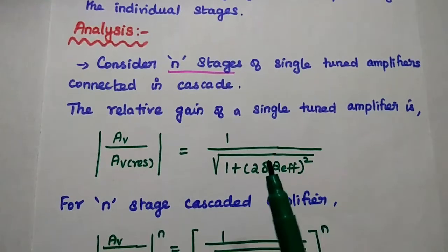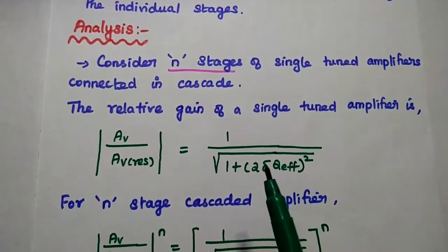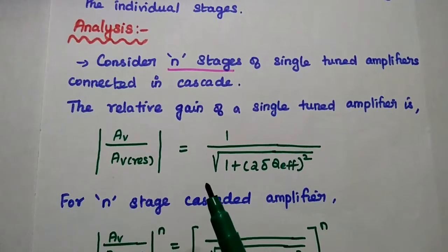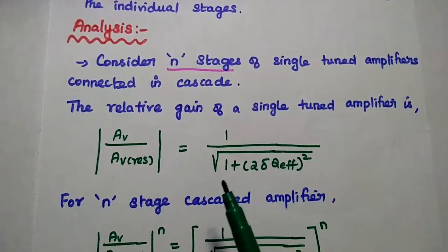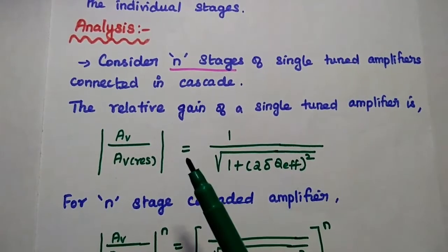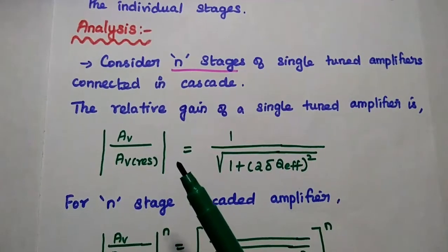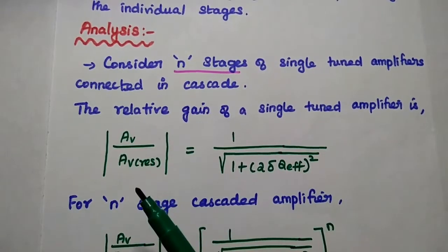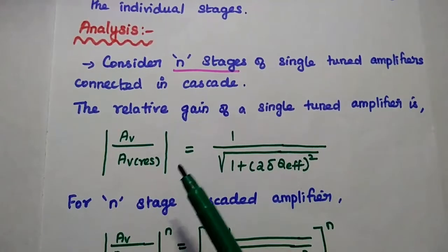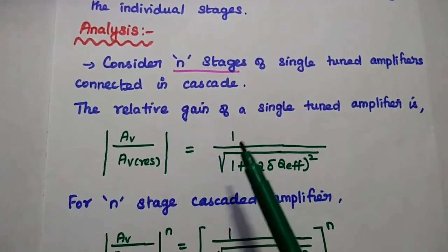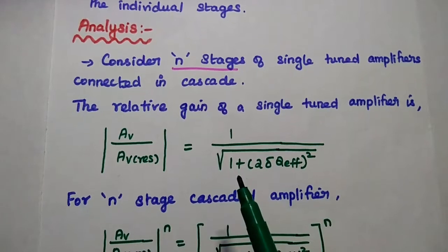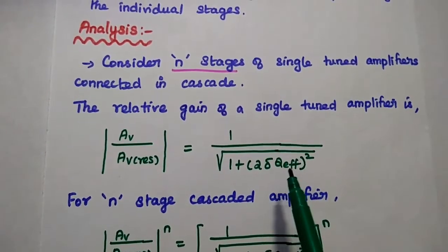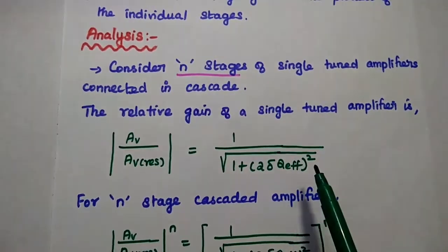We have already derived this expression in the previous lecture video, so we can directly use it here. The relative gain is the ratio of voltage gain to the voltage gain at resonant frequency, equal to 1 divided by the square root of 1 plus (2·δ·Q_eff) squared.